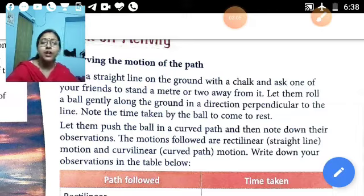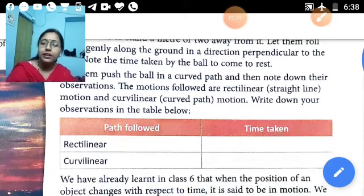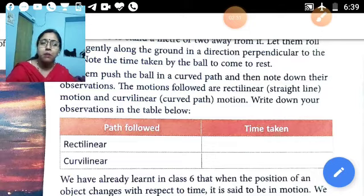The motion followed are rectilinear straight line motion and curvilinear motion. So there are two types of motion: rectilinear motion and curvilinear motion. Write down your observation in the table given below. For the rectilinear, time taken may be 4 or 5 minutes, and for the curvilinear, it may increase or decrease. It might be 5 to 7 or 8 to 9. So that means according to the path, the time taken will also change. So motion and time are related.